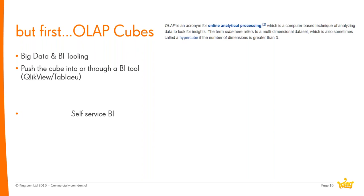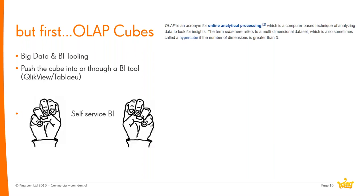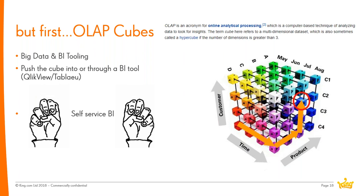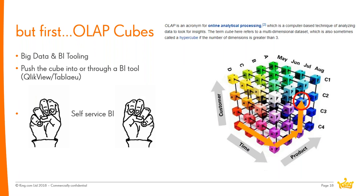In the data cube example, there is one row of data per customer, per product, and per time period, with all metrics pre-calculated. For example, customer 123 on the first of April for product 789 would have a quantity of two items and a total dollar spend of one hundred. This is likely how data is served up in most organizations.